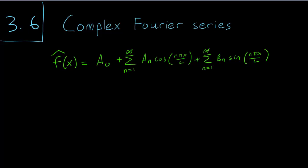Hello class, this is section 3.6, and in this video we are going to discuss an alternative way to write down Fourier series using complex numbers. So this is the traditional Fourier series, the sum of cosines and sines.